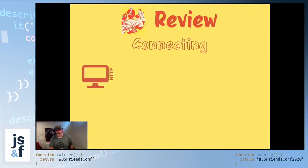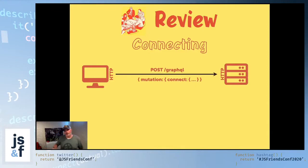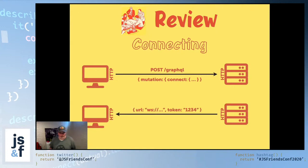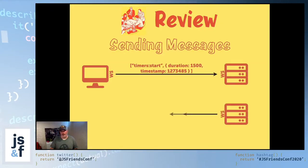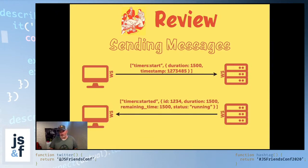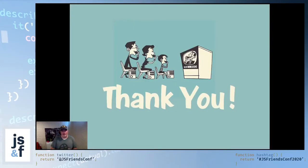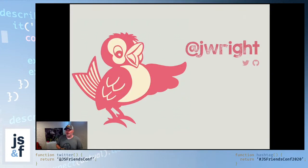Let's do a quick review. The client makes an HTTP GraphQL call with 'connect', the server sends back the token and URL, the client creates a WebSocket and connects to the server, and at some point the client sends a 'timers:start' message over the WebSocket. The server then broadcasts a 'timer:started' event to all connected clients. That's the WebSocket API. Thank you very much — if you have any questions feel free to reach out on Twitter or email. Thank you for your time.